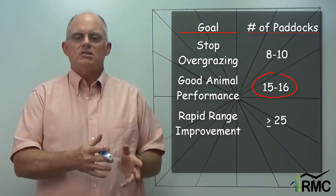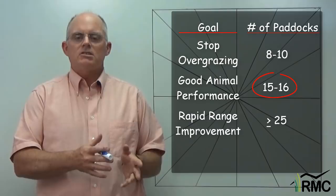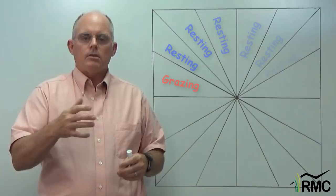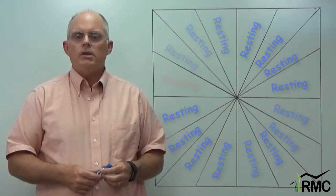This fellow had 16 paddocks with one herd, which means that while the animals are grazing in one paddock, the other 15 are resting. My first question to grazers when I'm visiting their places is usually, how long is your rest period? How much time are you giving paddocks to recover after grazing?